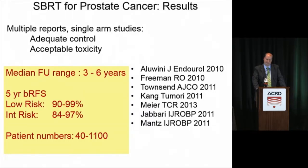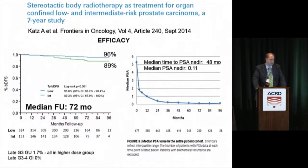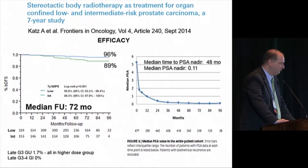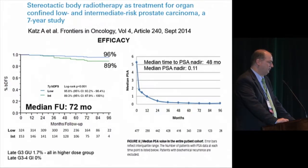In general, median follow-up has been between 3 and 6 years. Biochemical relapse-free survival at 5 years was between 90 and 99% for low-risk disease and between 84 and 97% for intermediate-risk disease. Most studies are small, in the range of 50 to 100 patients, although there are larger studies, particularly from Dr. Katz on Long Island and from the Georgetown group. Three notable exceptions with concerning results are from Dr. Yu, Dr. Boyke, and Dr. Kim.